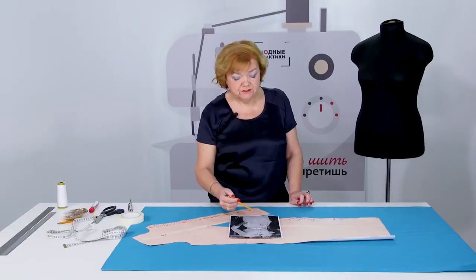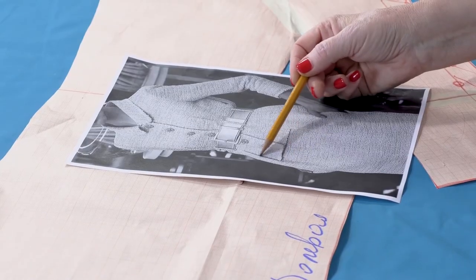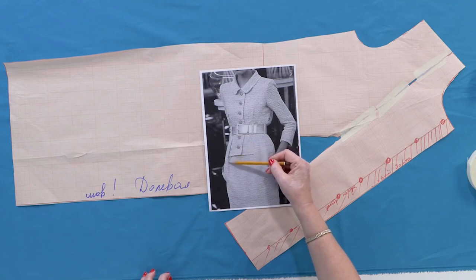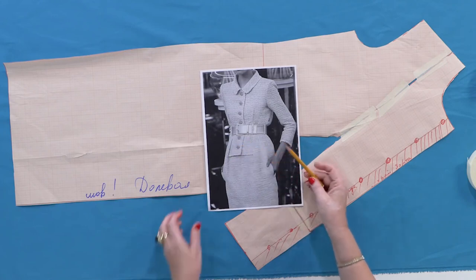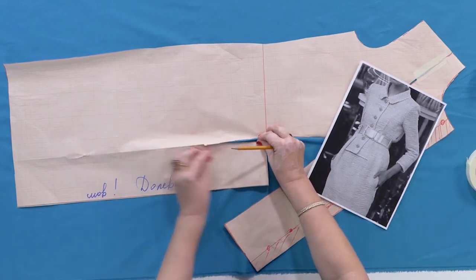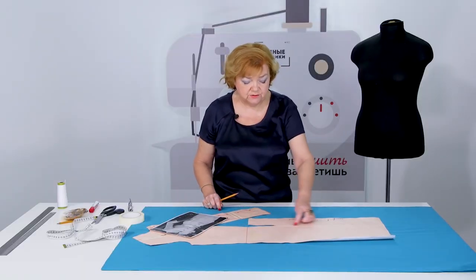Moreover, there is a pin tuck combined with a waist tuck, like in tulip skirts. In this case, we do not have extra fabric to make a pin tuck. This part will be folded. I'll show you what to do. Don't worry.